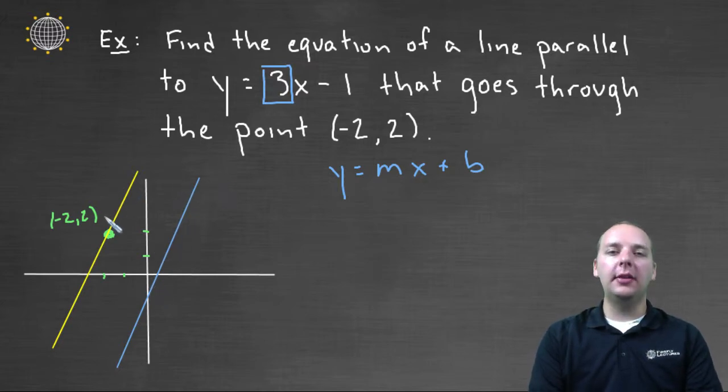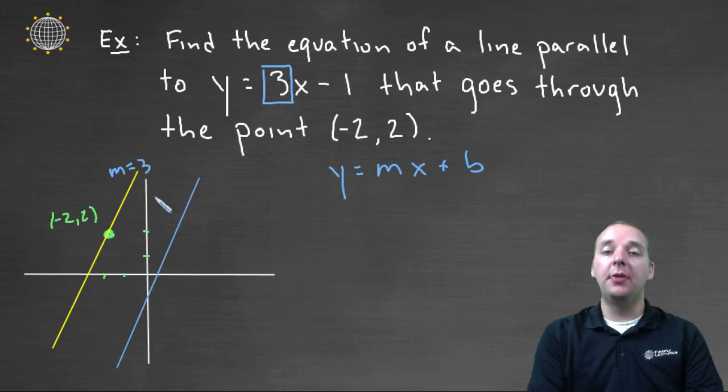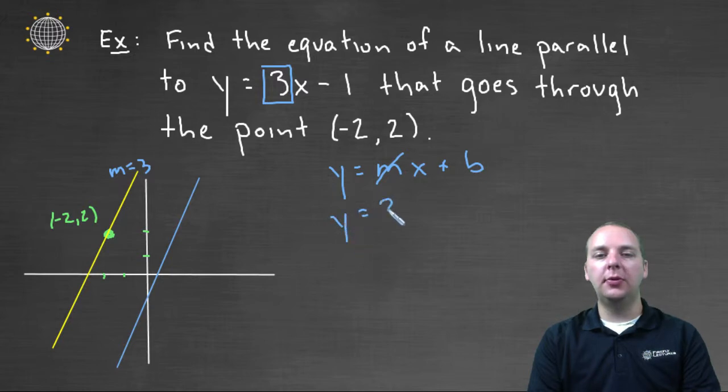Now if our line is parallel to that, what does that mean? That means our line also has a slope of three, if they're going to be parallel. So what we can do is we can take the m out, and replace it with three.